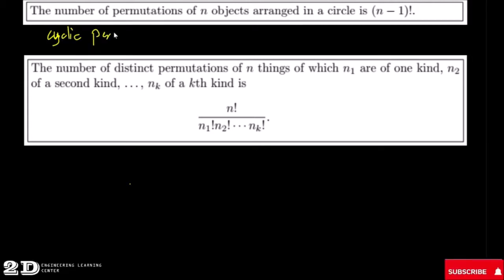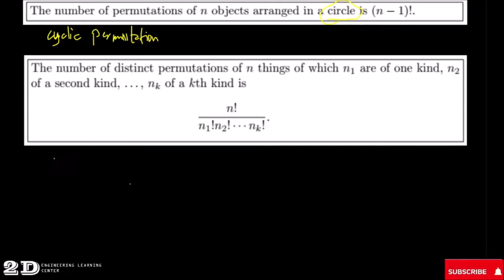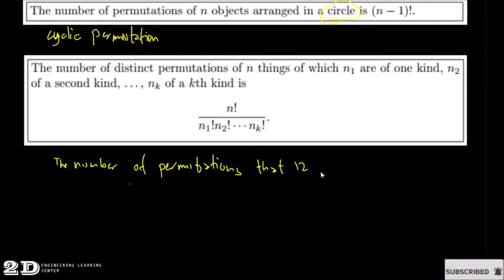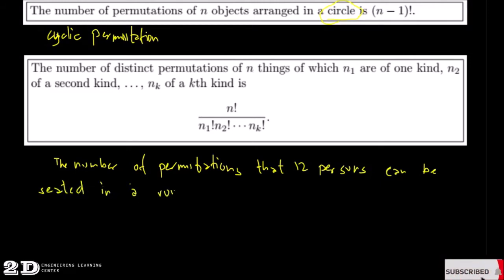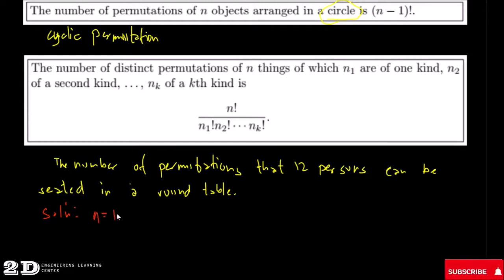Cyclic permutation: the number of permutations of n objects arranged in a circle is (n-1)!. For example, if you are going to find the number of permutations that twelve persons can be seated at a round table, that will be a cyclic permutation problem.